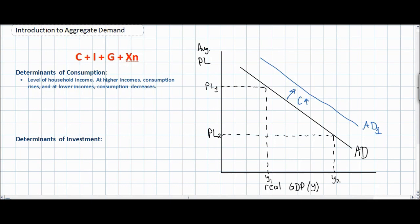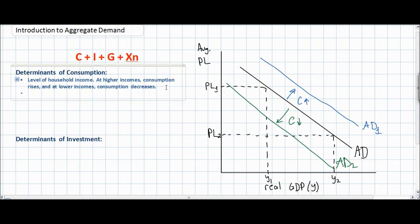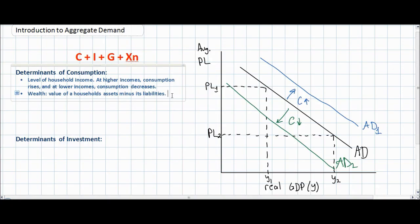However, if household incomes fall, consumption will decrease and AD will shift to the left to AD2. The level of household income is not the only determinant of consumption — household wealth is also a determinant. Household wealth refers to the value of a household's assets minus its liabilities, such as stock portfolios, government bonds, or real estate investments, and is distinct from wages earned.